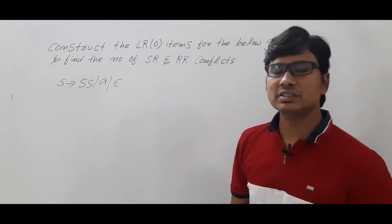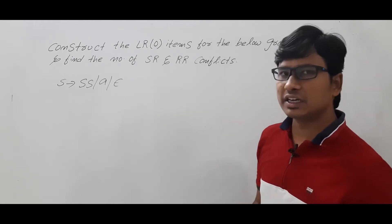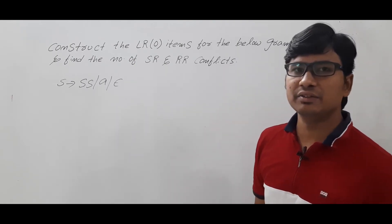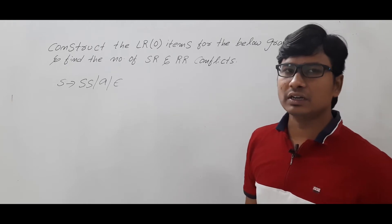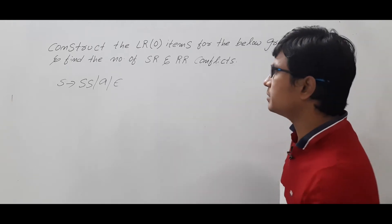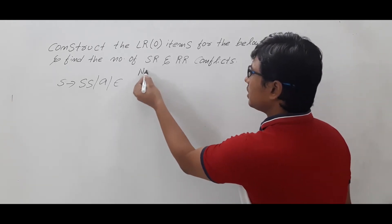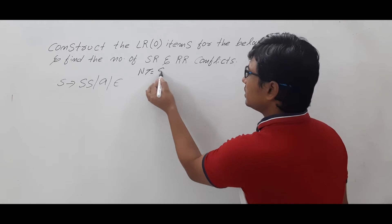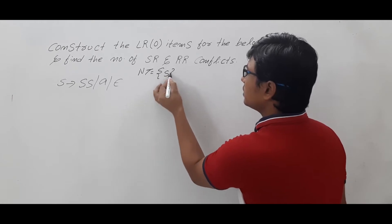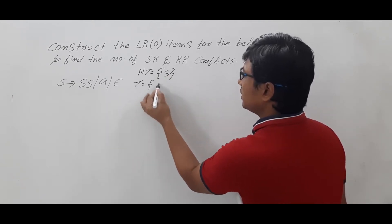So how to construct the LR0 items? First I need to identify what are the non-terminals and the terminals. So the non-terminals are S and the terminals are A.